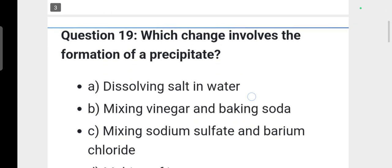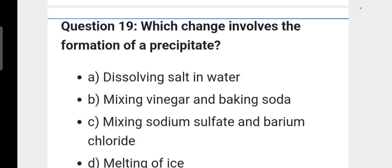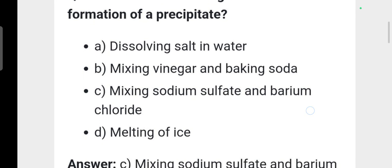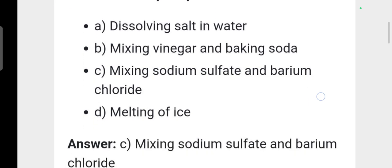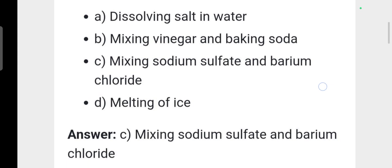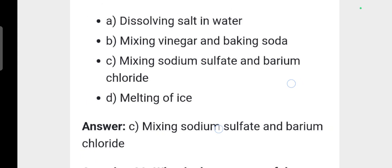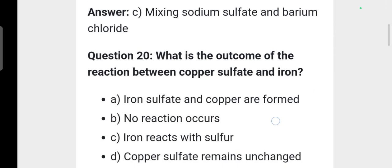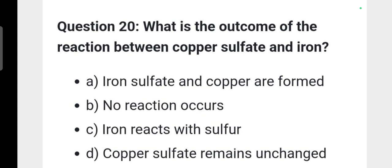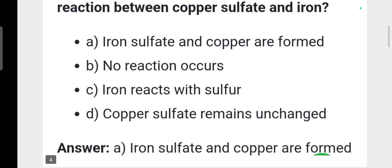Next question: Which change involves the formation of a precipitation? Option C is correct, that is mixing sodium sulfate and barium chloride. Next question: What is the outcome of the reaction between copper sulfate and iron? Option A is correct, iron sulfate and copper are formed.